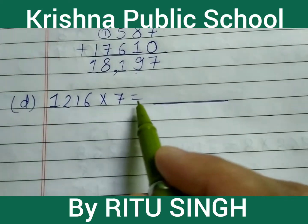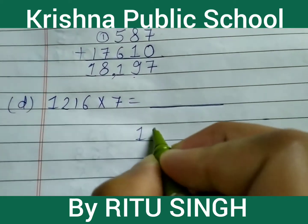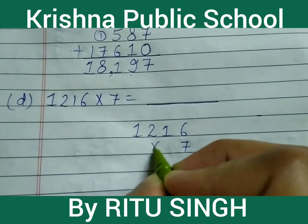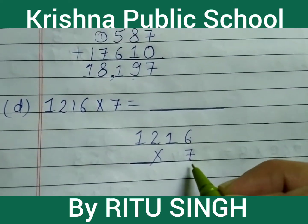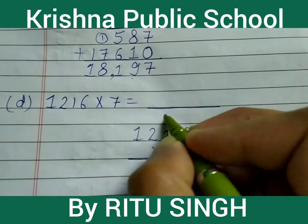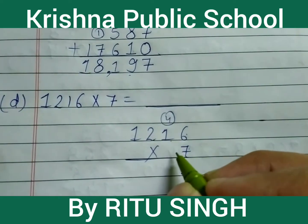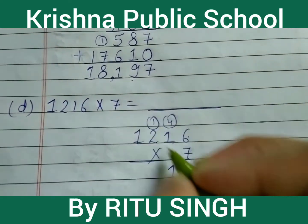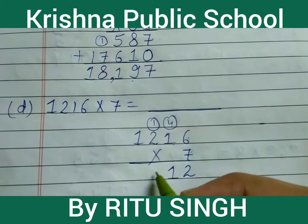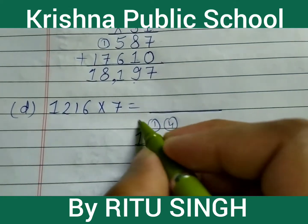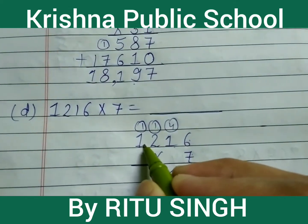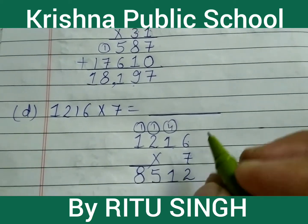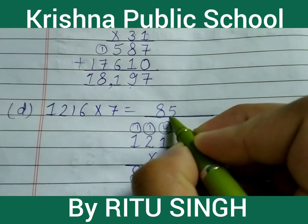Next question: 1216 multiply by 7. 7 into 6 is 42 — write 2, carry 4. 7 into 1 is 7, add 4 is 11 — write 1, carry 1. 7 into 2 is 14, add 1 is 15 — write 5, carry 1. 7 into 1 is 7, add 1 is 8. Your answer is 8512.